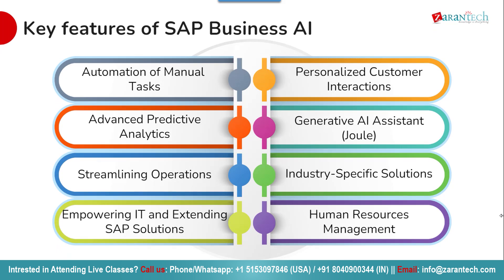SAP Business AI changes how businesses operate with its many features. Automating manual tasks frees up time for employees to focus on important projects. Advanced predictive analytics help businesses make smart decisions and respond quickly to new trends. Streamlined operations improve efficiency and cut costs, while custom solutions help IT departments and various industries work better. The platform's personalized customer interactions improve the customer journey, and the generative AI assistant Joule Copilot boosts productivity and provides valuable insights.